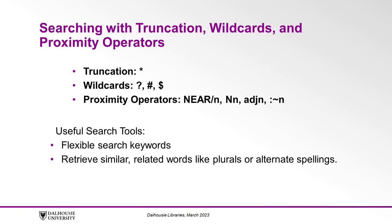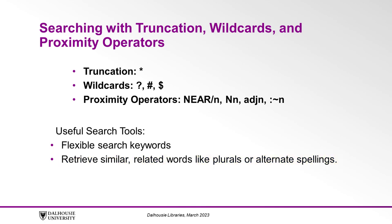It's important to understand why we use truncation, wildcards, and proximity operators. These tools allow keywords to be more flexible so that your search includes similar, related words like plurals or alternate spellings. However, please note that you cannot use these techniques with subject headings, and if you do, the database will give you inaccurate results.